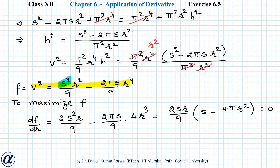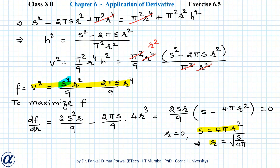Setting this equal to zero gives r = 0 or S = 4πr², so r = √(S/4π). The negative solution is ignored since r, being a distance, is always positive. We also neglect r = 0 as that gives a degenerate cone with zero base radius. To verify this is a maximum, we find the second derivative of f.